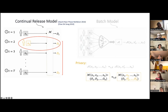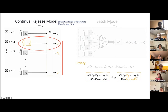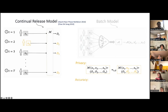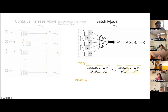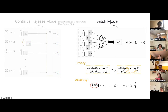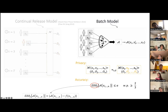We handle this by requiring that the distribution of the set of all outputs of the mechanism is epsilon-delta close on neighboring datasets. Crucially, for this definition to make sense, the future inputs cannot change — we require the dataset to be fixed at the outset. In our ICML 2023 paper we also formulate an adaptive model where future inputs can change based on outputs seen so far, but privacy is trickier to define there. In this talk we focus on the non-adaptive setting.